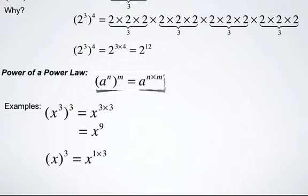x to the 1 to the exponent 3 would be x to the 1 times 3. 3 x's in a repeated multiplication, x to the third.